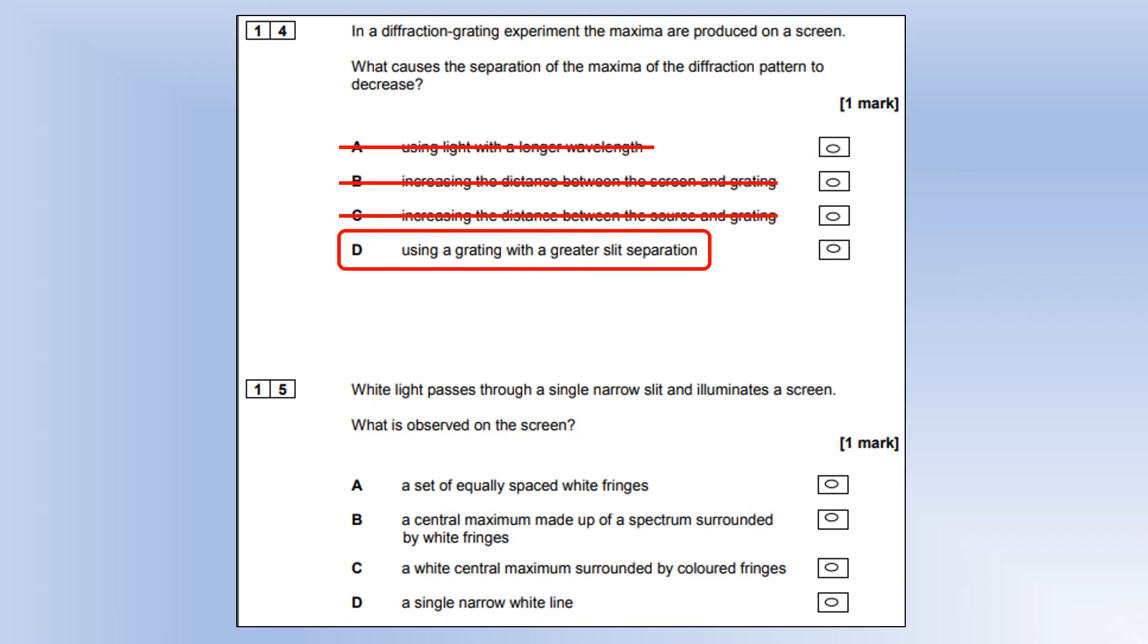White light is passed through a single narrow slit and illuminates a screen. What is observed? A set of equally spaced white fringes? No, the outer fringes are not white. A central maximum made of a spectrum surrounded by white fringes? No, the outer fringes are not white and the central one is not a spectrum. A central white maximum surrounded by colored fringes? Yep, that's the one we're looking for. A single narrow white line? No, that would indicate no interference has happened.